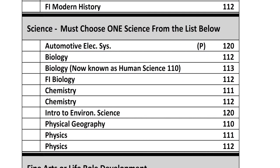Now let's look at the science options. In order to graduate from a New Brunswick high school, students must have a minimum of one science at the grade 11 or 12 level. If you are quite interested in science or are considering a science degree in university, you will want to choose chemistry and at least one other grade 11 science class. It is recommended that those interested in sciences take all the grade 11 science classes they want first — such as Chemistry 11, Biology 11, and Physics 11 — and wait until grade 12 to take the grade 12 versions of these courses. Please choose at least one science course from the list by placing an X in the box on the left-hand side of the course you are selecting.